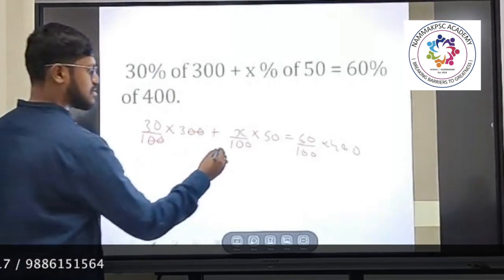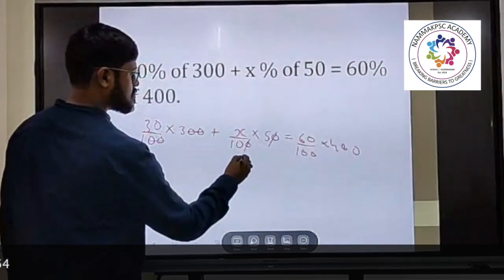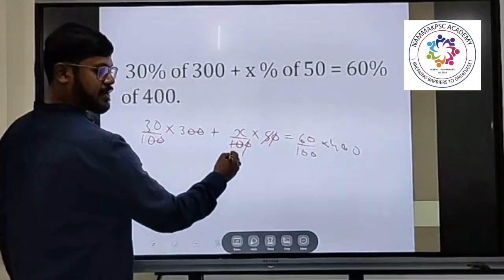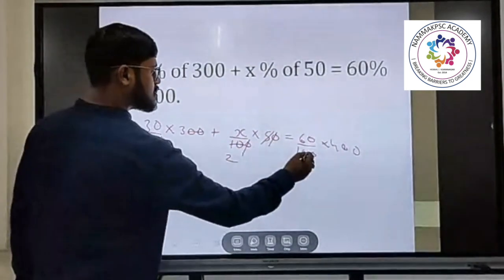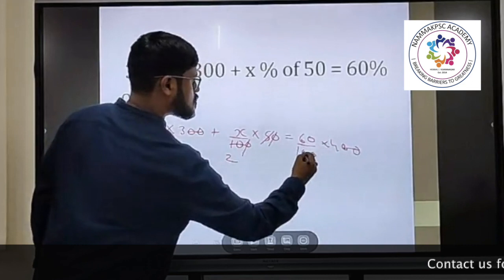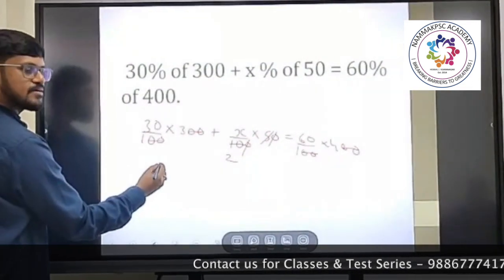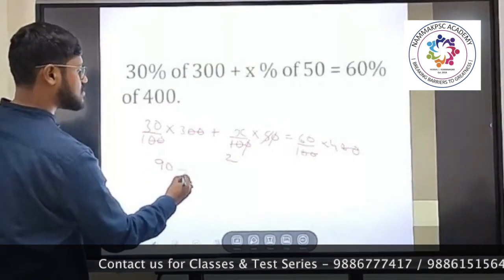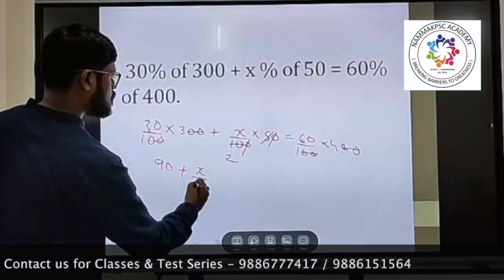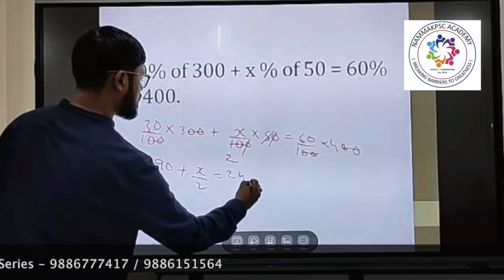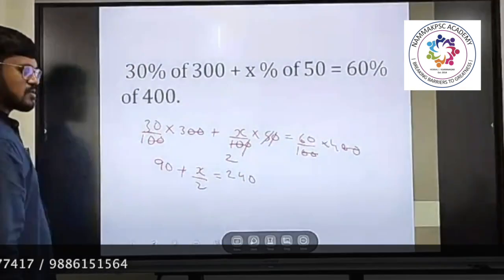Yes. One zero is here, one zero is here. So five, how many times will you get ten? Two times. Similarly, two zeros, two zeros. Then what will happen to this equation? 13 to 3 is what? 90 plus x by 2 is equal to 16 to 4 is 240, yes or no?